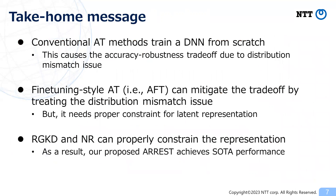Here is the take-home message of this work. Conventional AT methods involve training a DNN from scratch, which leads to the accuracy-robustness trade-off due to the distribution mismatch issue. Fine-tuning-style AT, such as AFT, can mitigate this trade-off; however, it needs proper constraints for latent representations. RGKD and NR effectively constrain the representation, resulting in our proposal ARREST achieving state-of-the-art performance.